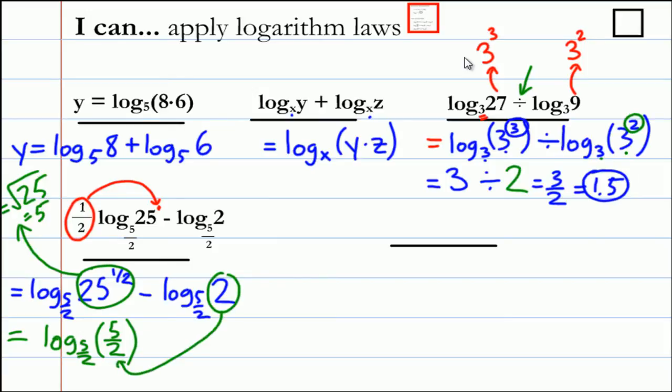The 2 came from here and the 5 came from here. Now we have the base of the log and the base of the argument to be the same. The power here is 1, so the answer is just 1.